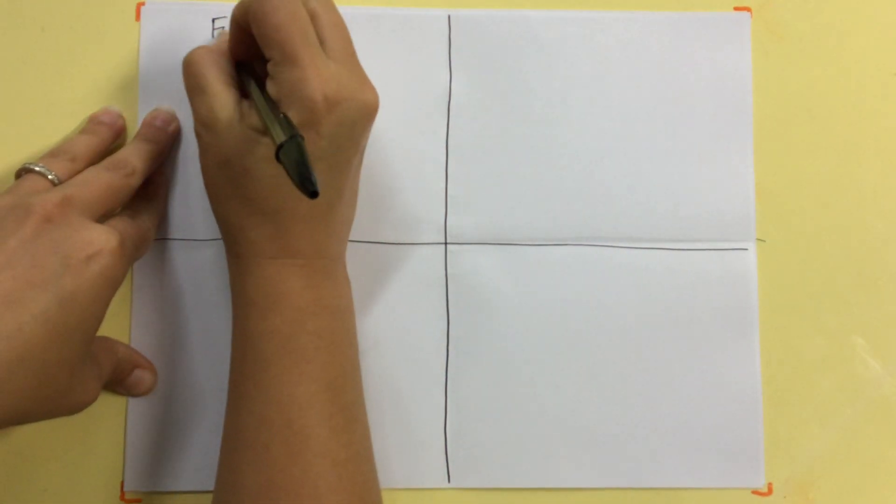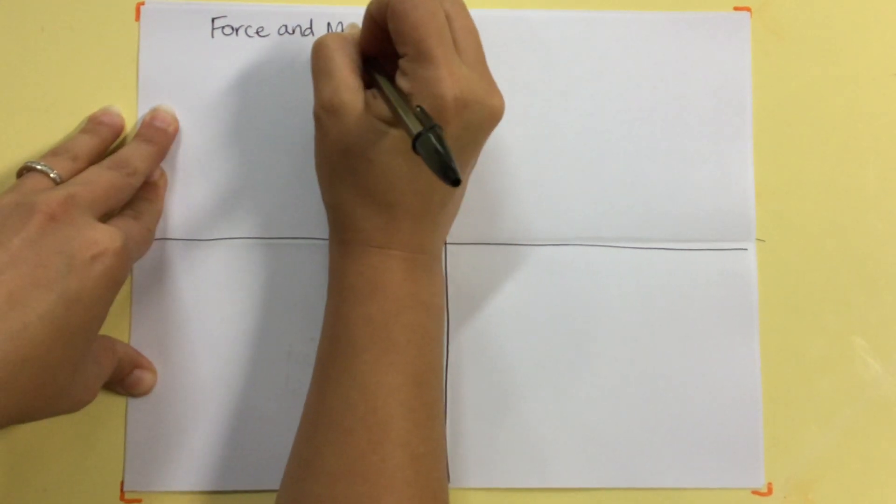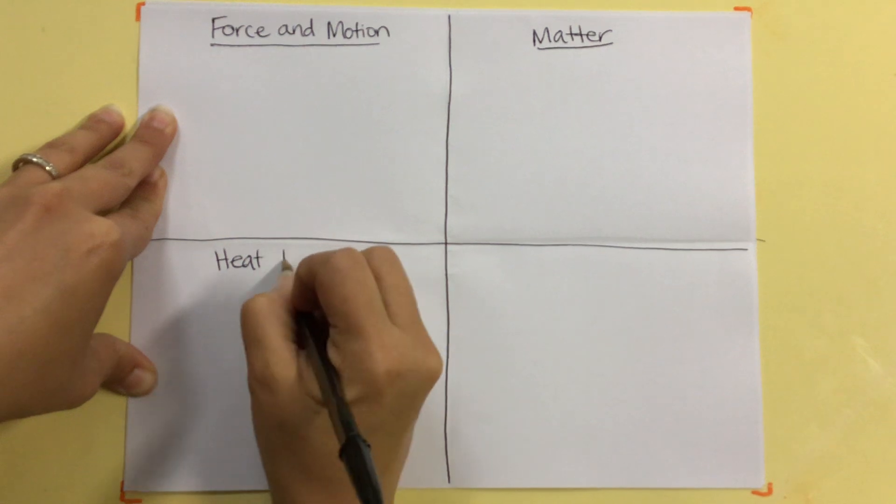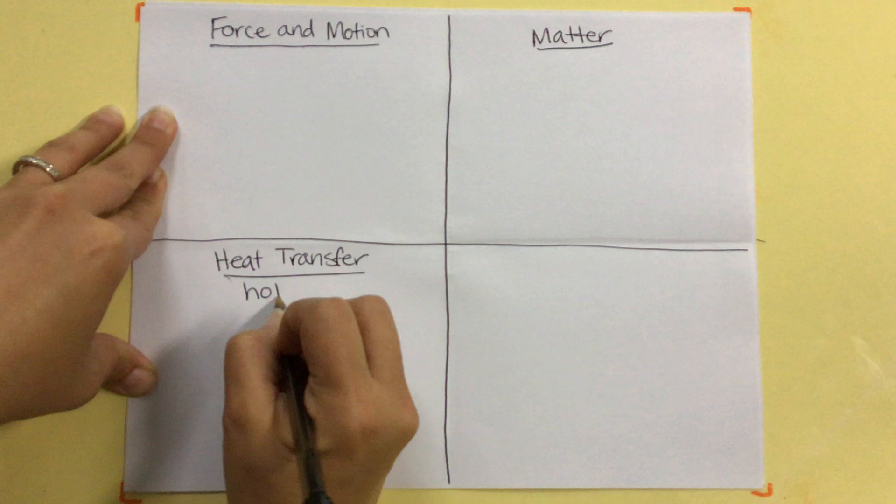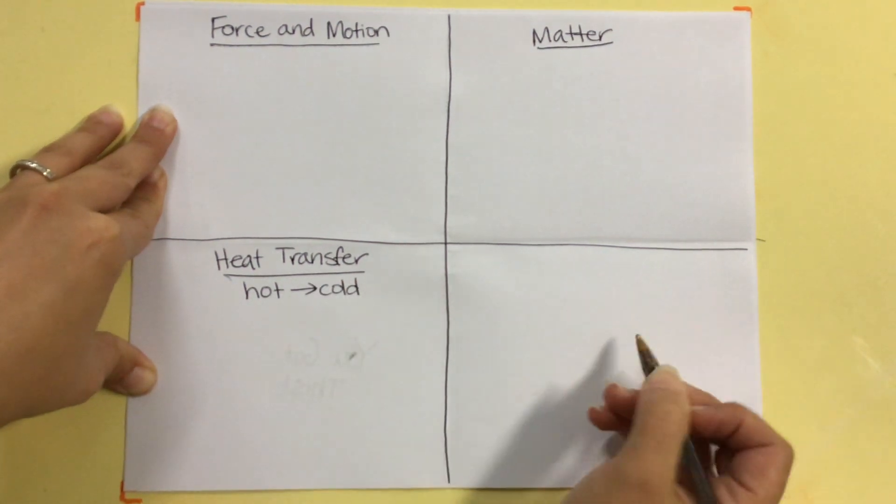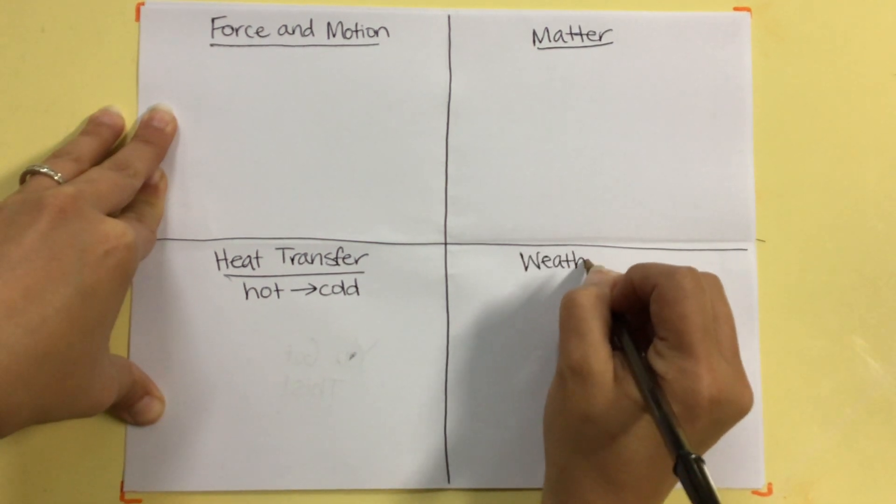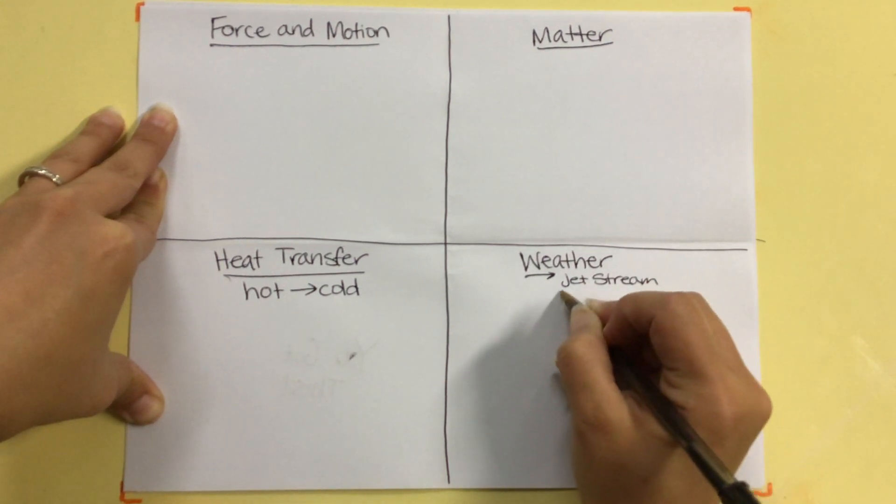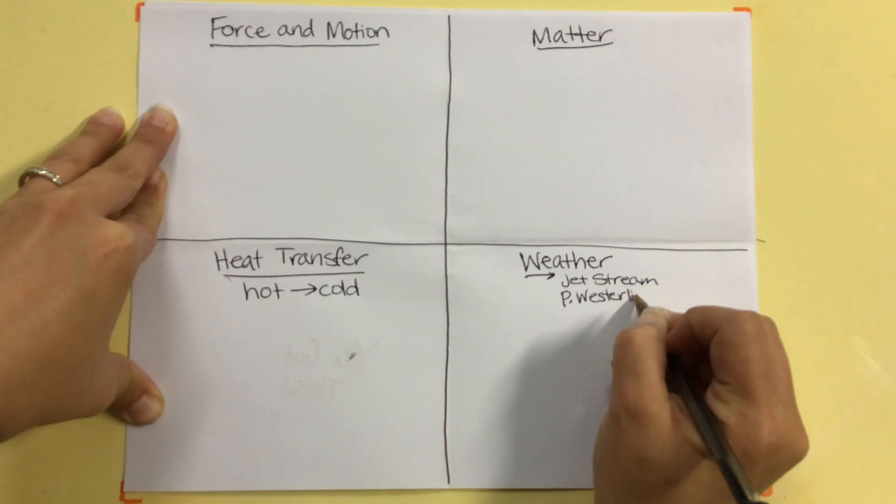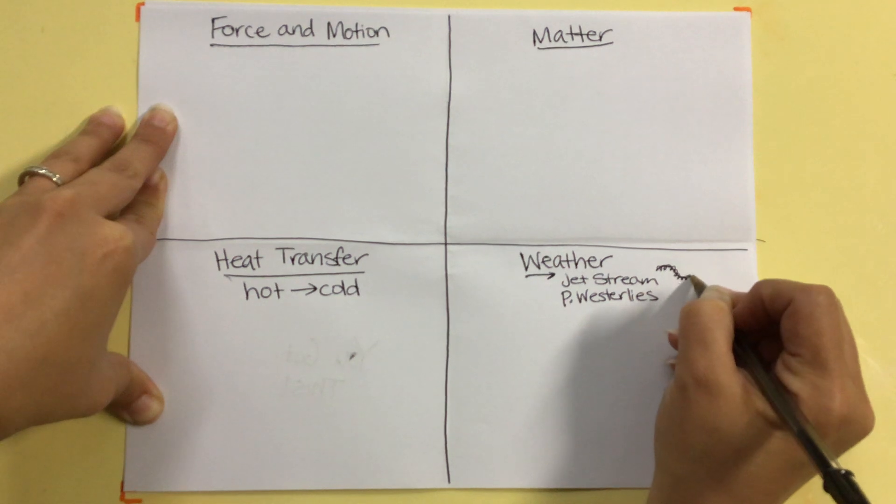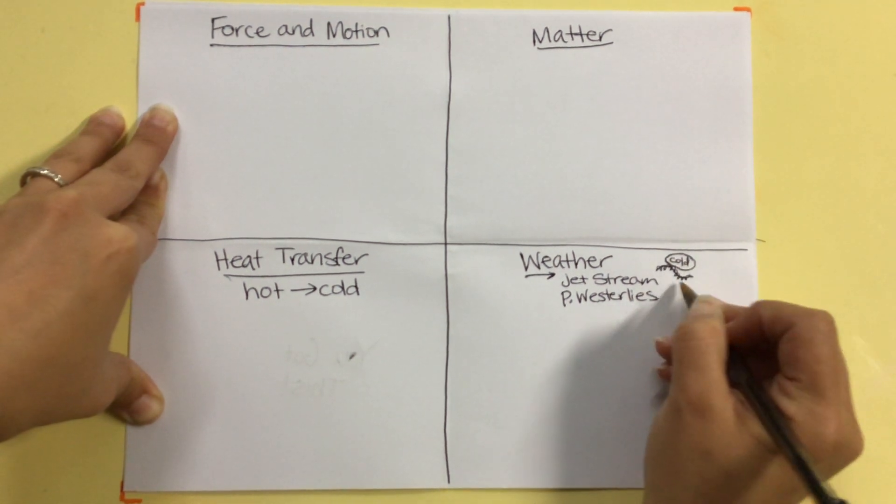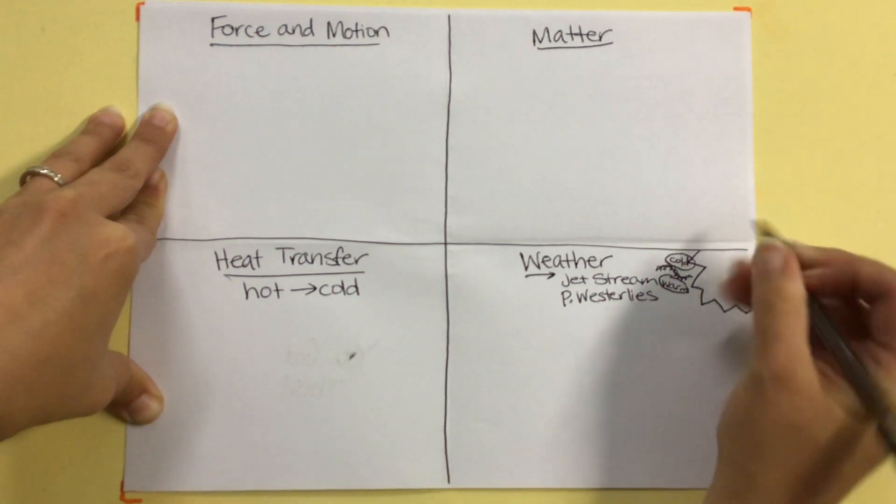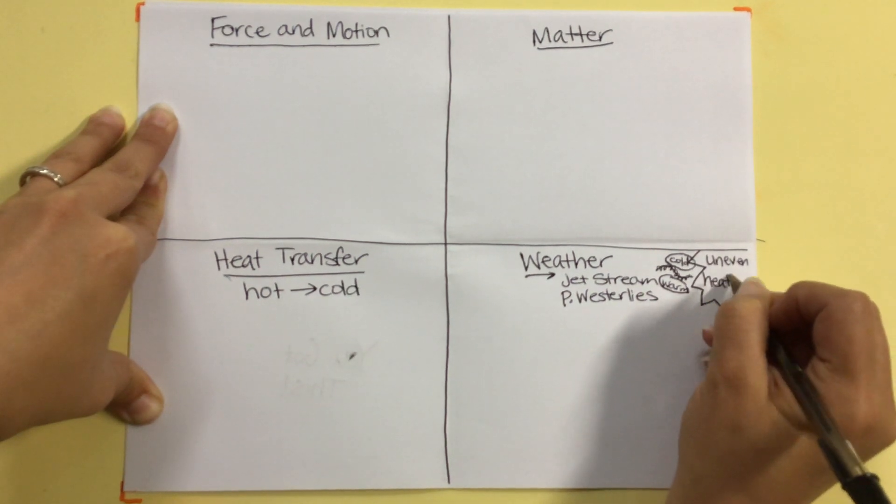So, first we learned force of motion. It was followed by matter. Then heat transfer. Heat transfer is really neat. It always goes from hot to cold. We're going to go ahead and write that so that we don't forget that. And then we spent a lot of time on weather. Before we move from weather, we're going to write weather moves from west to east because of the jet stream and the prevailing westerlies. And we're going to draw us a cool little picture of the jet stream to help us remember what it looks like. It's a tunnel of air that separates the cold air mass from the warm air mass. And, again, weather is caused by uneven heating.